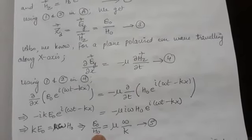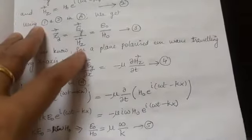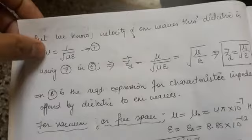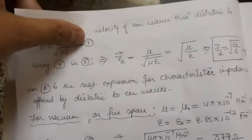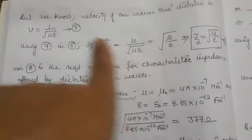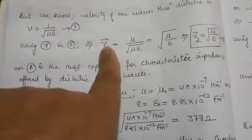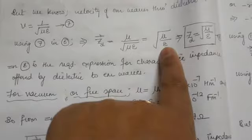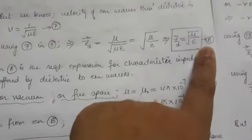From equation 3, E₀ / H₀ is already ZD. So ZD = μω / K. Now, the velocity of electromagnetic waves through dielectrics is given by v = 1 / √(με), which is equation 7. Using equations 6 and 7, ZD = μ / √(με) = √(μ/ε). This becomes equation B — a clear expression for the characteristic impedance offered by a dielectric to an electromagnetic wave.